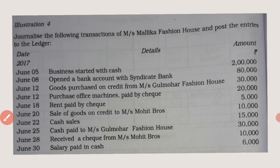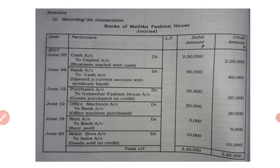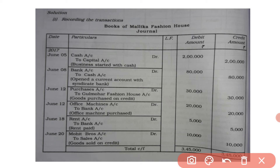Next, June 20: sale of goods on credit to Majors Mohit Brothers 10,000. Mohit Brothers account debited to sales account. Sales will always be credited — why? Because sales means it is income, and incomes are always credited. Debit 10,000, credit 10,000. Narration: being goods sold on credit.